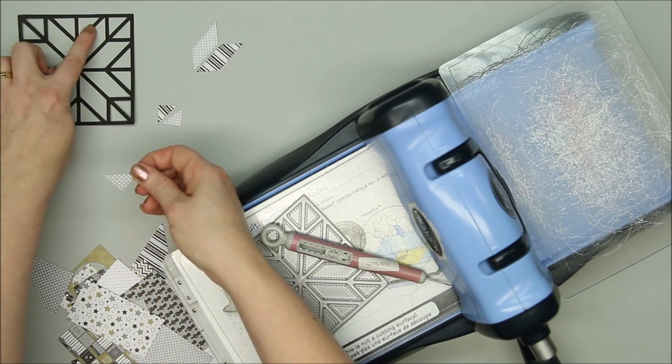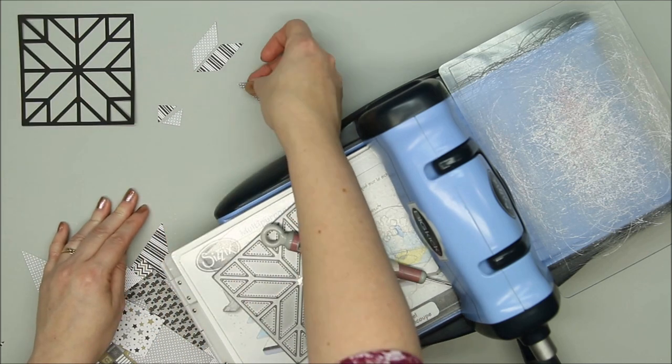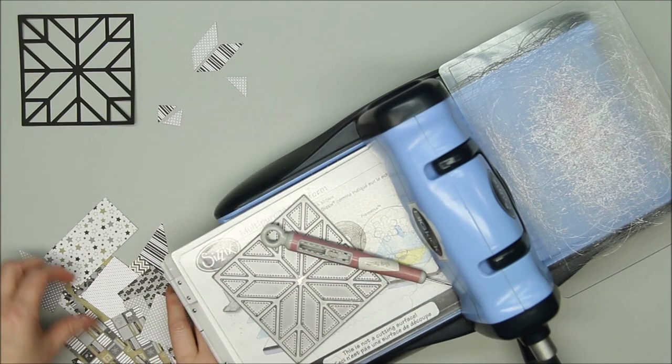Every once in a while, I'll use a piece of wax paper with the pattern paper. It helps when removing the pieces.